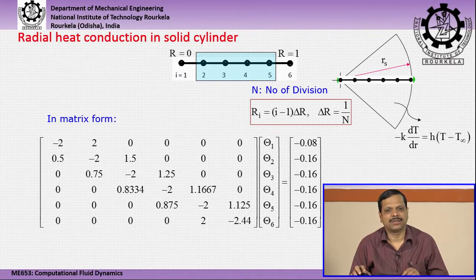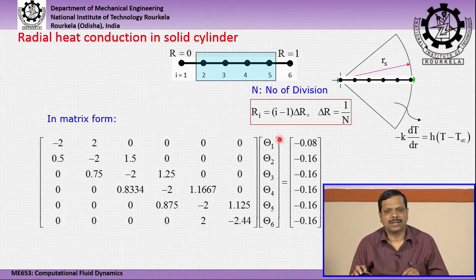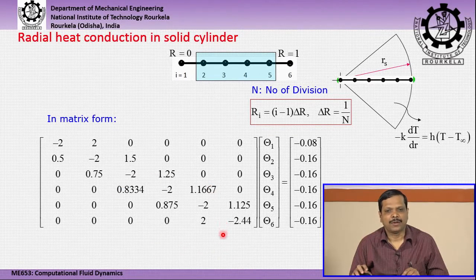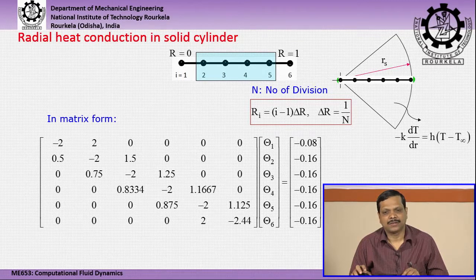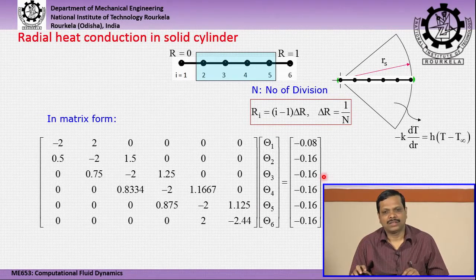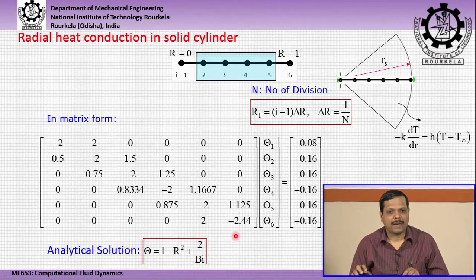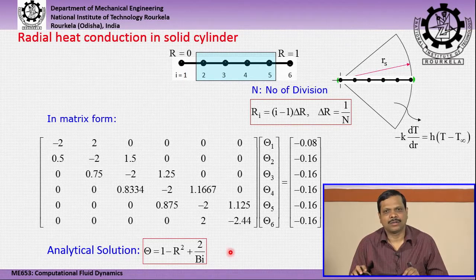After discretizing the governing differential equations we obtain 6 equations with 6 unknowns from theta-1 up to theta-6. In matrix form, this gives 36 coefficients on the left-hand side and 6 coefficients in the column matrix on the right-hand side. We use a computer program to solve this set of equations and then compare the numerical solution with the analytical solution to verify accuracy.